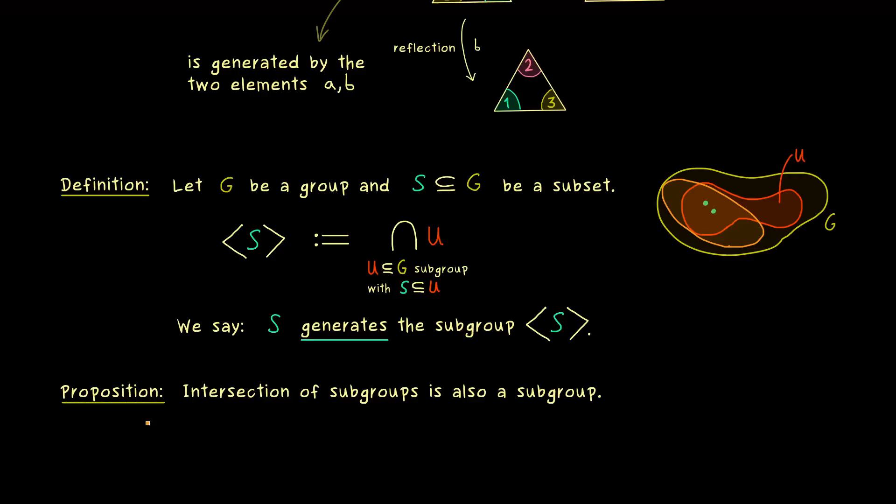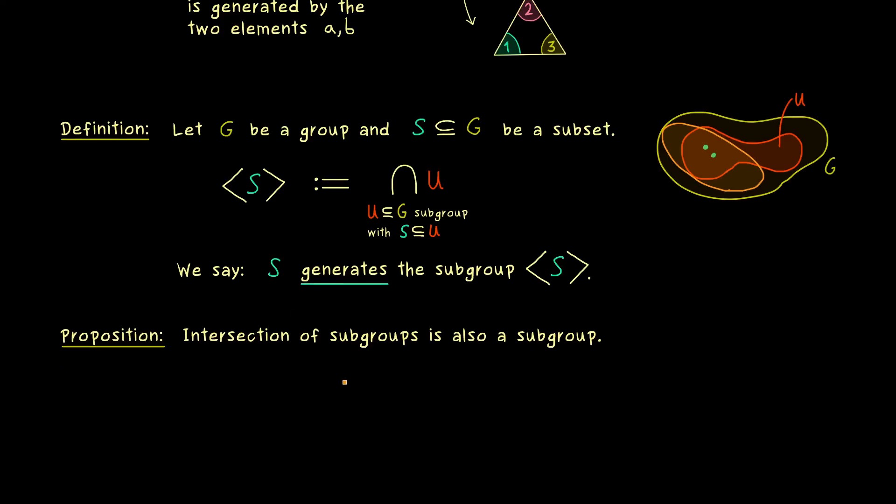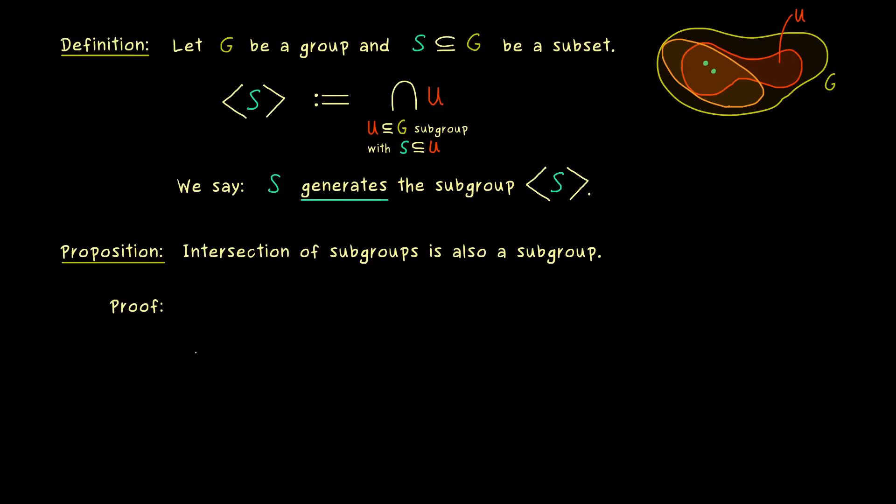Indeed this proposition is easy to formulate. Any intersection of subgroups is a subgroup again. So you see, this is a very general thing. It does not work with the unions, but an intersection of subgroups is always a subgroup. And in fact the proof is surprisingly easy.